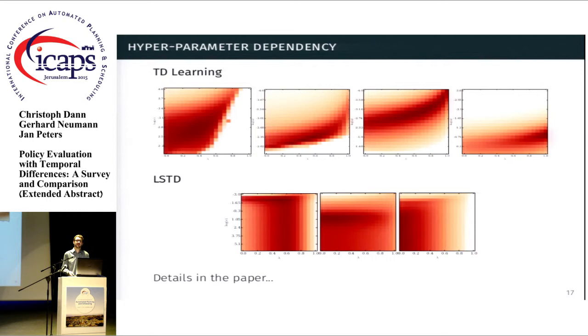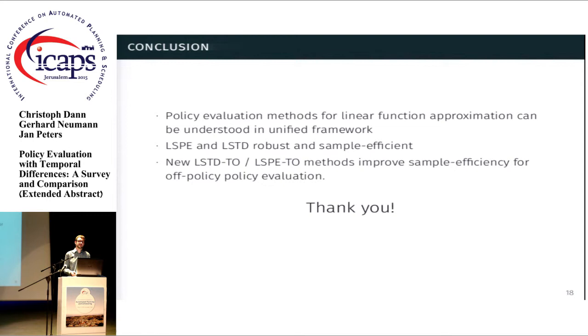Let me conclude now with a few remarks. Policy evaluation methods for linear function approximation can be understood well in this framework of function optimization. And our empirical results indicate that least-square policy evaluation or least-square STD learning is a good default choice for policy evaluation because they're generally robust and sample-efficient. However, if you're in an off-policy setting, you might want to use the transition off-policy weighting strategy because it gives you way better performance empirically. Thank you.